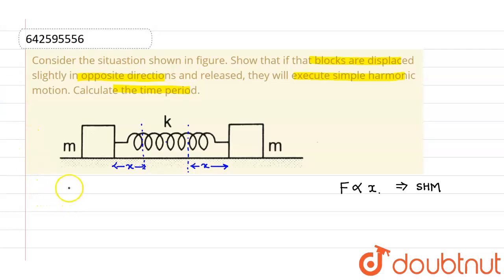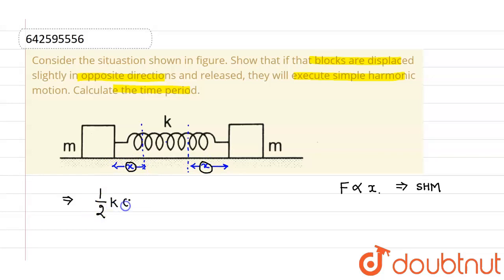Since no external force is present, the energy will remain constant. The spring will be compressed by a length 2x — x from the left and x from the right. So the increase in potential energy of the spring will be half k (2x)², since we know the potential energy of a spring is given by half k x² where x is the extension, and here the extension is 2x.